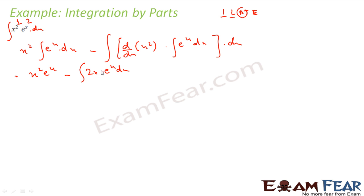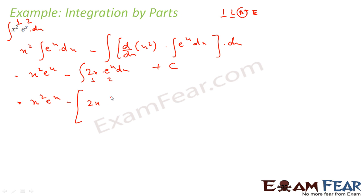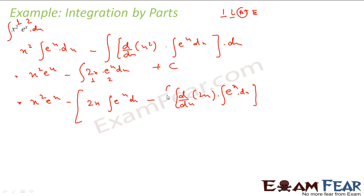Now again, this is also a product of two functions, so we apply the same formula. Do we have inverse? No. Logarithmic? No. Algebraic? Yes. So take 2x as first and e^x as second. This gives x²·e^x minus [2x·∫e^x dx minus ∫(d/dx(2x)·∫e^x dx) dx], which is x²·e^x minus 2x·e^x minus ∫2·e^x dx.